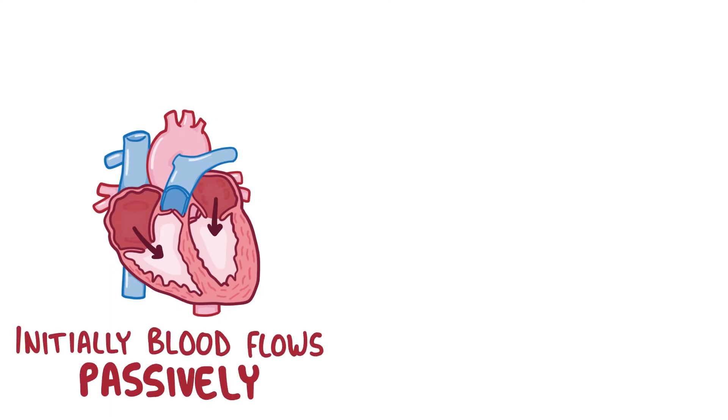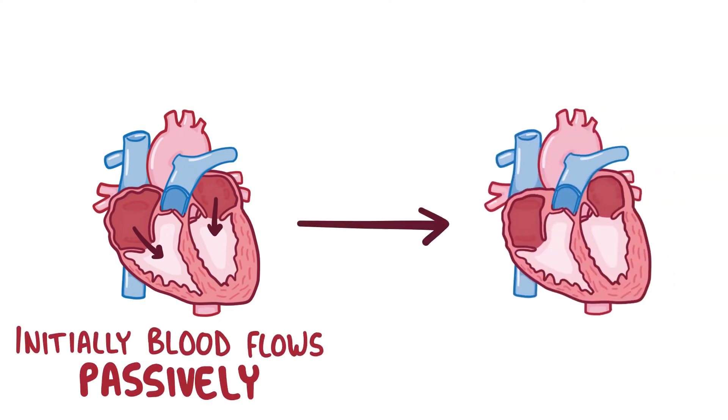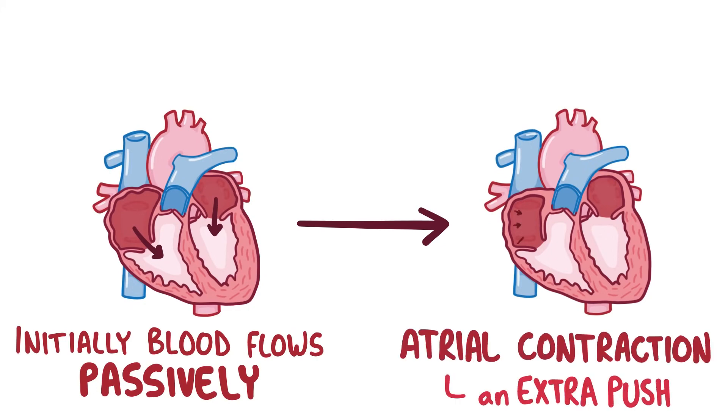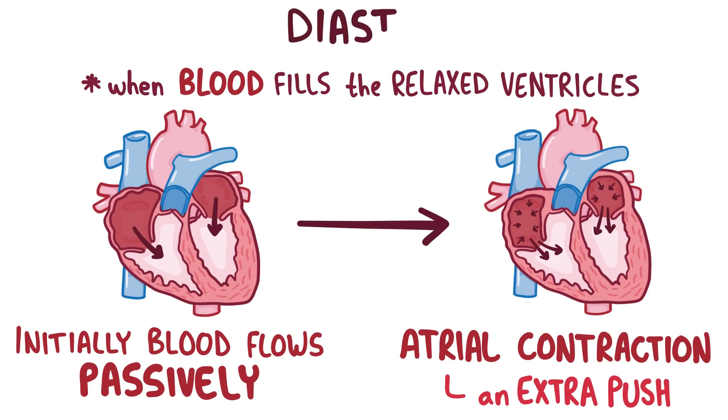Initially, the blood flows passively into the ventricles, but near the end when there's just a bit left, there's an atrial contraction that gives the blood an extra hard push to help get it out. This part of the heartbeat, when blood is filling the relaxed ventricles, is called diastole.